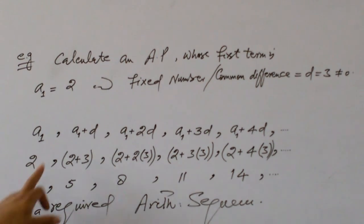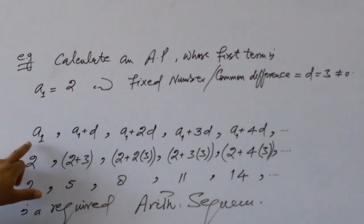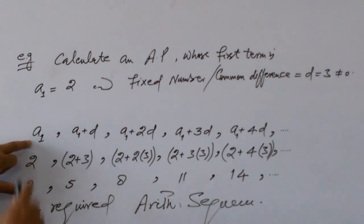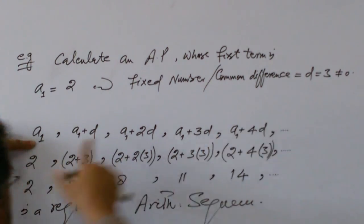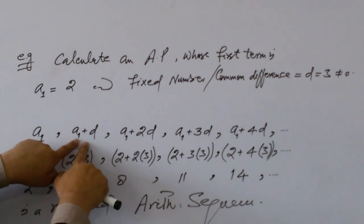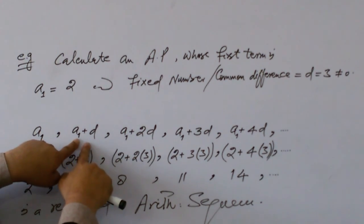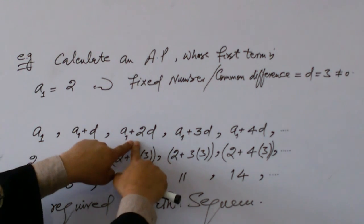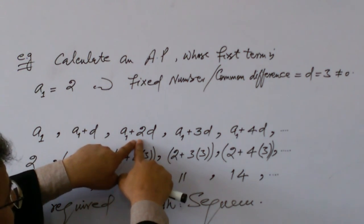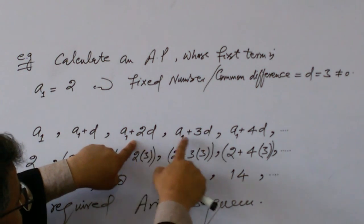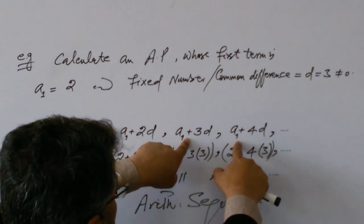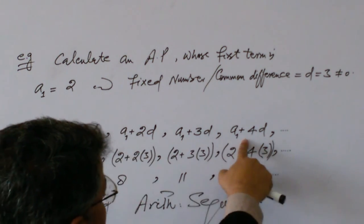The general term of the arithmetic sequence is A1, then A1 plus D is the next term. Adding the common difference to each previous term gives: A1 plus D, then A1 plus 2D, then A1 plus 3D, then A1 plus 4D, and so on.